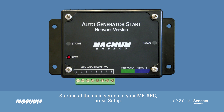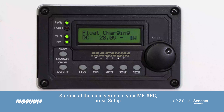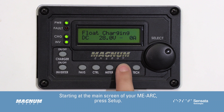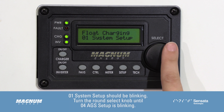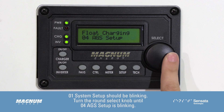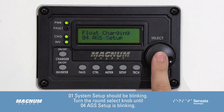Starting at the main screen of your MEARC, press Setup. 01 System Setup should be blinking. Turn the Round Select knob until 04 AGS Setup is blinking, then press Select.